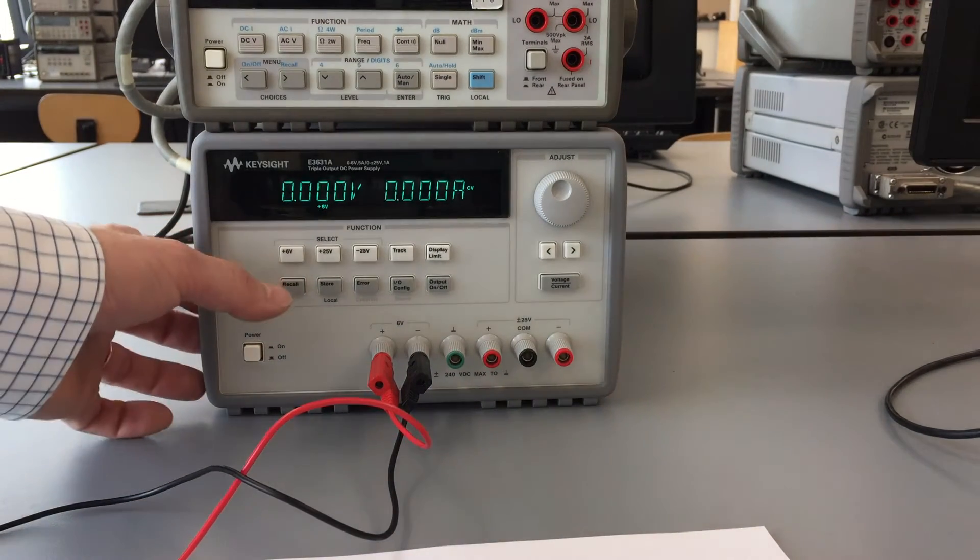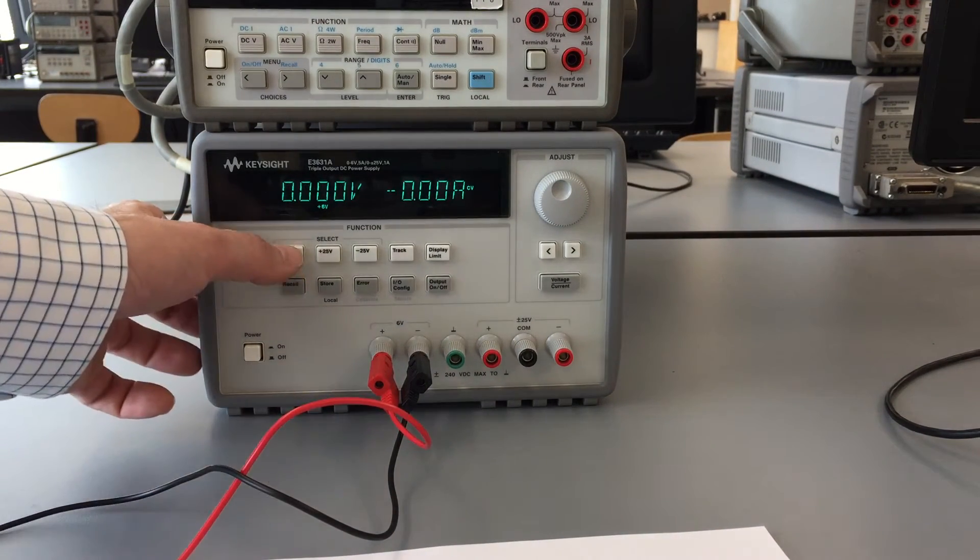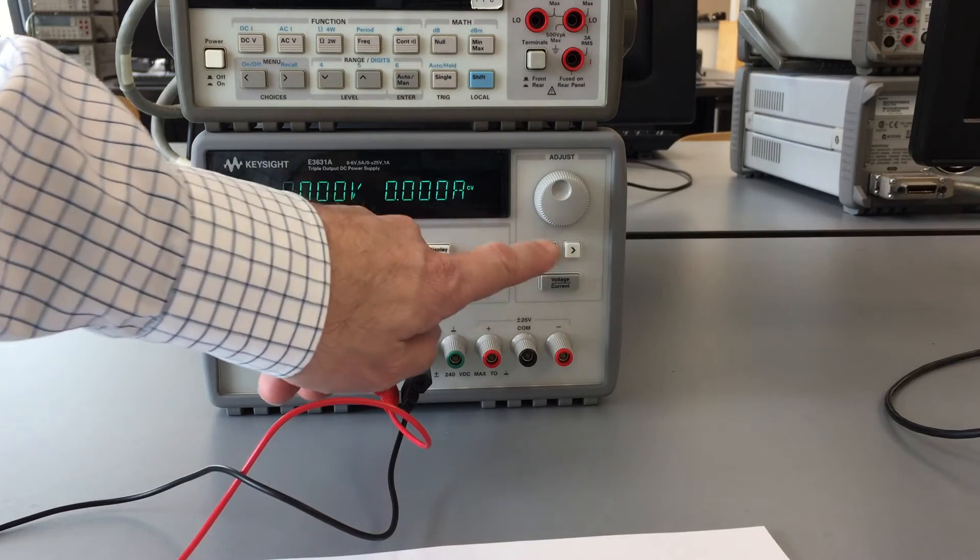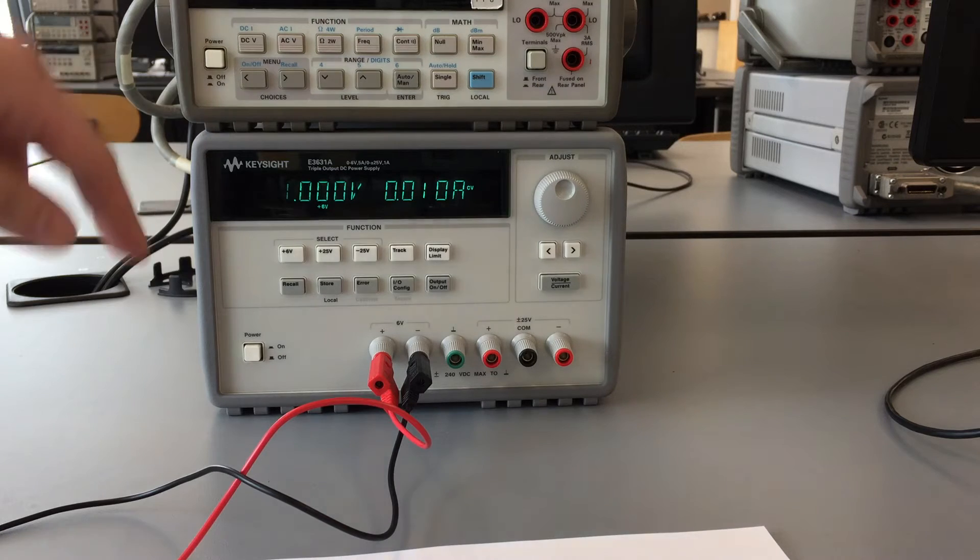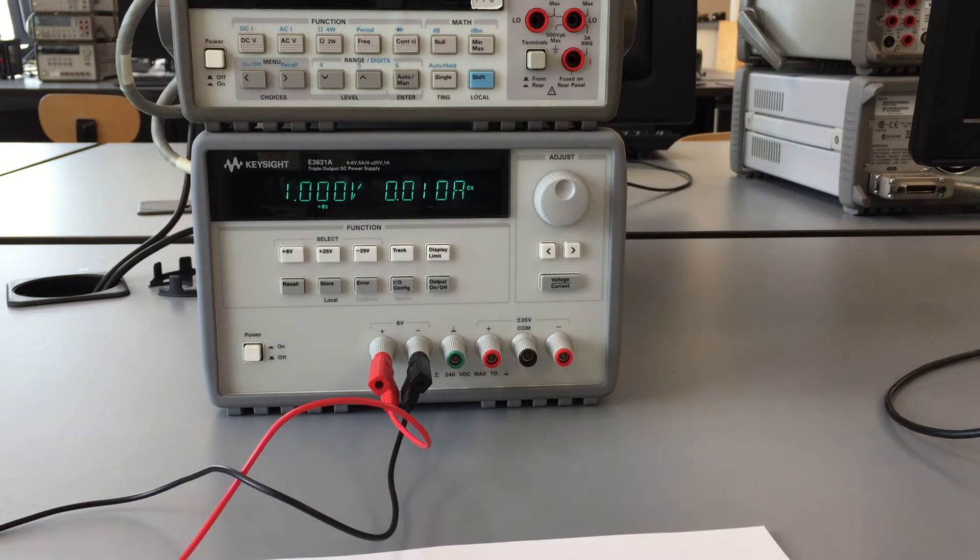First thing we'll do is put some voltage across our resistor. We're set on plus six volts. Now we'll put one volt across there. Okay, so we have one volt going across our 100 ohm resistor.